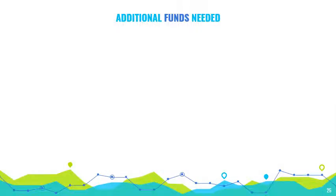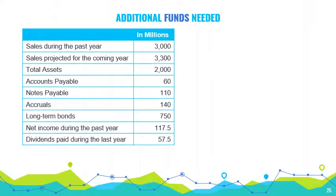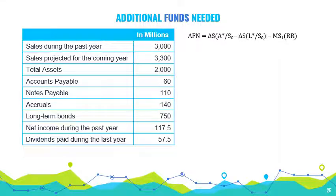Suppose that a company has the following figures. Let's first compute for each of the components in the AFN formula. The sales growth is equal to the sales projected for the coming year less the sales during the past year.